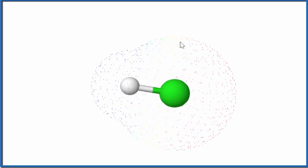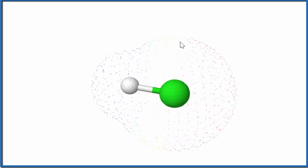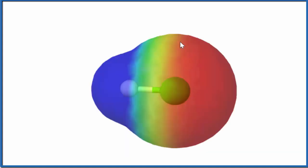If we look at the surface of the molecule, we can see that the red on the chlorine is more negative, and the hydrogen is the blue area, which is more positive. So we do have a polar molecule with HCl.